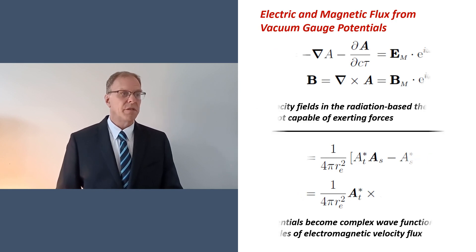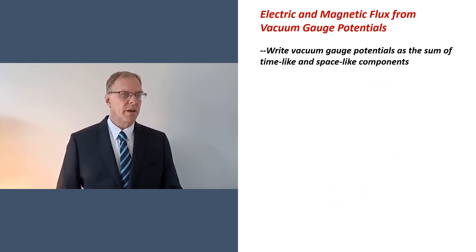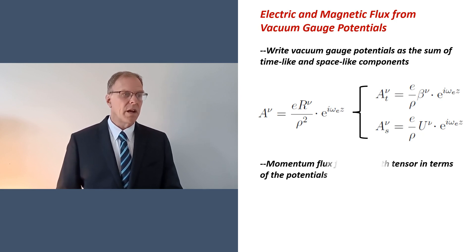In a covariant approach, vacuum gauge potentials can be written in terms of their time-like and space-like components. These individual components can be organized to produce a momentum flux field strength tensor, which we're calling pi mu nu.